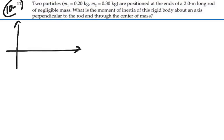Well, let's imagine this. In order to figure out the moment of inertia, we have to find the center of mass first. So let's imagine that we have this rod. It's 2 meters long, has negligible mass. We have mass 1, which is 0.2 kilograms at one end, and mass 2, which is 0.3 kilograms at the other end.